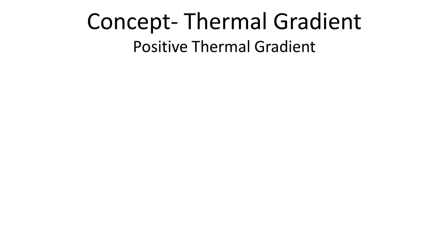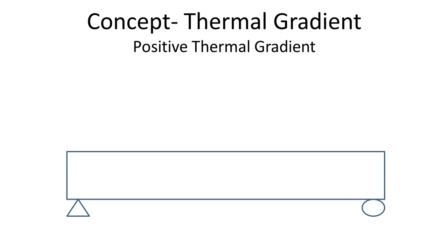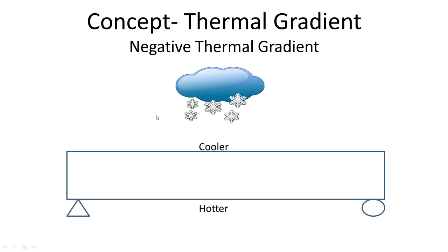Let's get started with something simple. Let's say you have a simply supported beam and the sun is shining on top of it. The top surface of the beam would be hotter compared to the bottom surface, and this particular type is called positive thermal gradient. Similarly, if it's snowing, the top surface of the beam would be cooler compared to the bottom surface, and this is called negative thermal gradient.